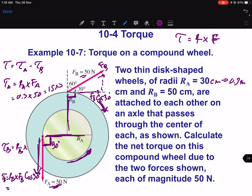Torque B is 50 centimeters, convert to meters, which means 0.5. F_B is 50. Cos 30 is square root 3 over 2. You get around 25 over 2 times square root 3.